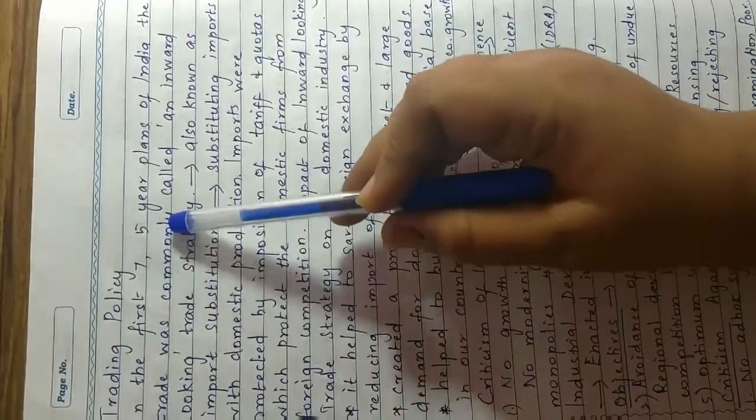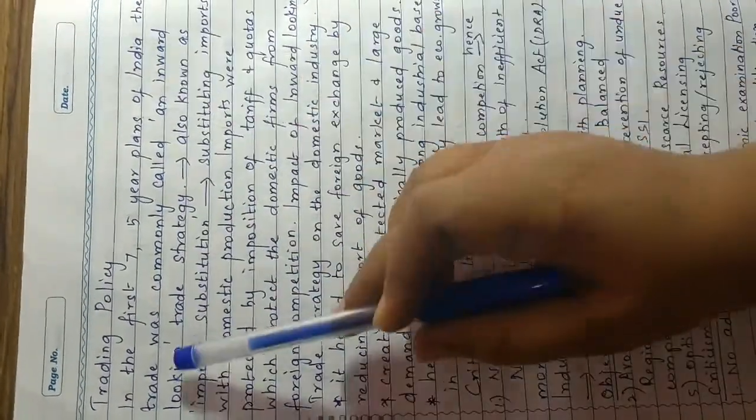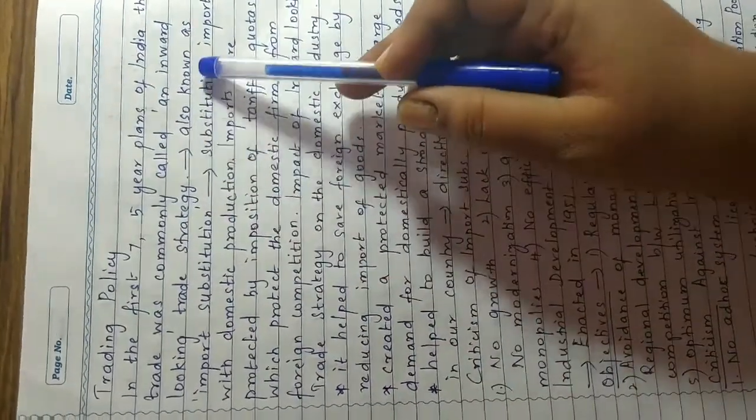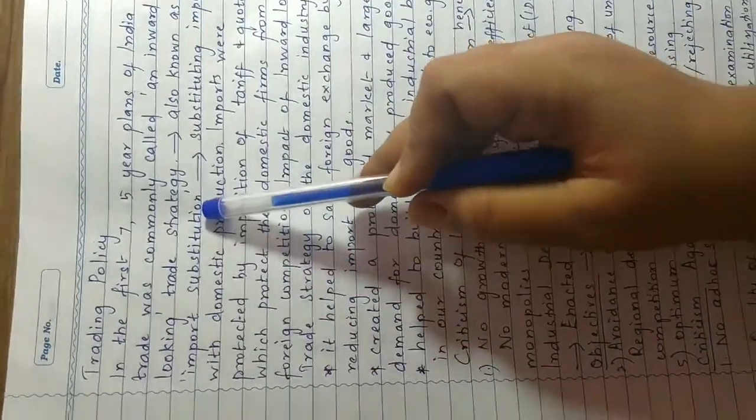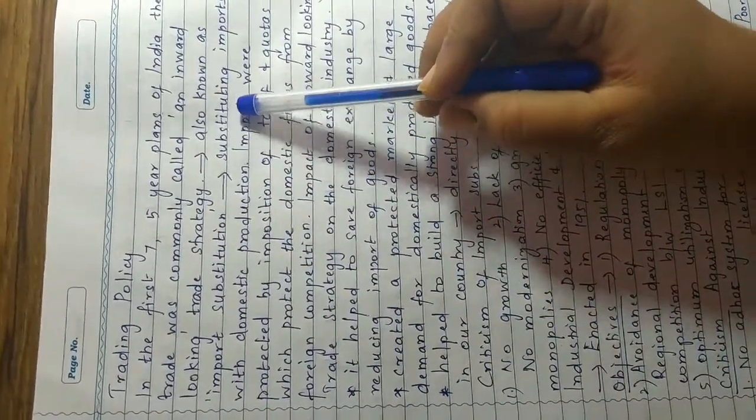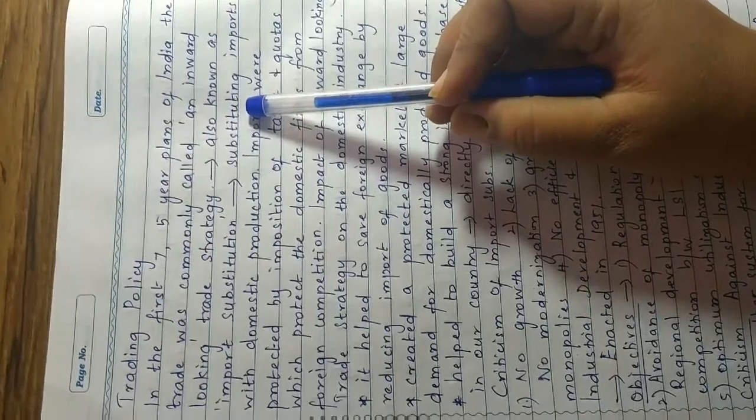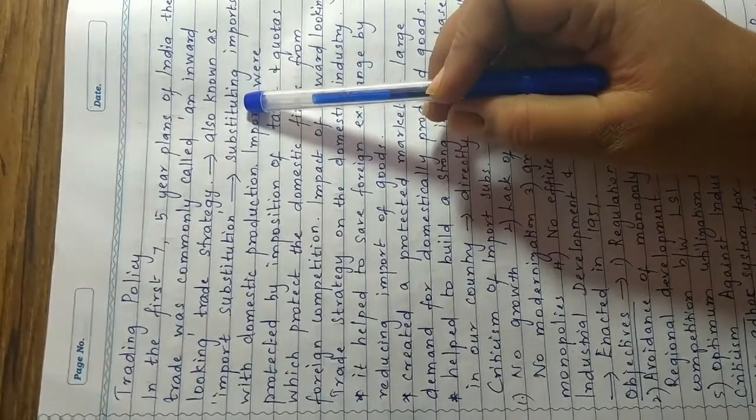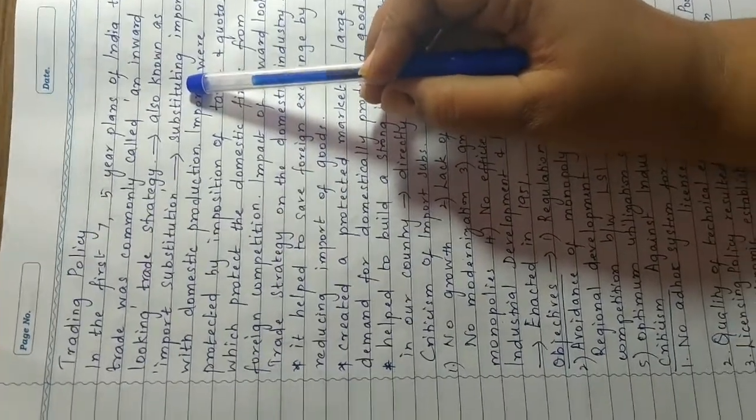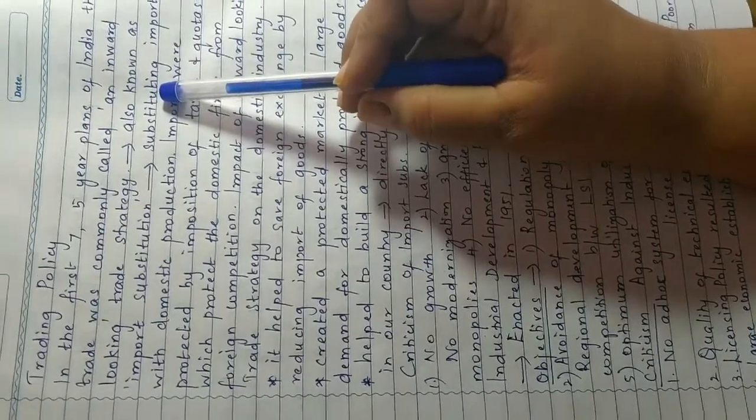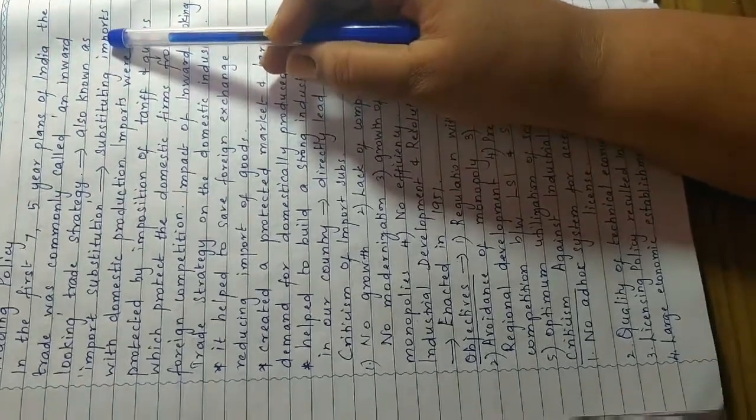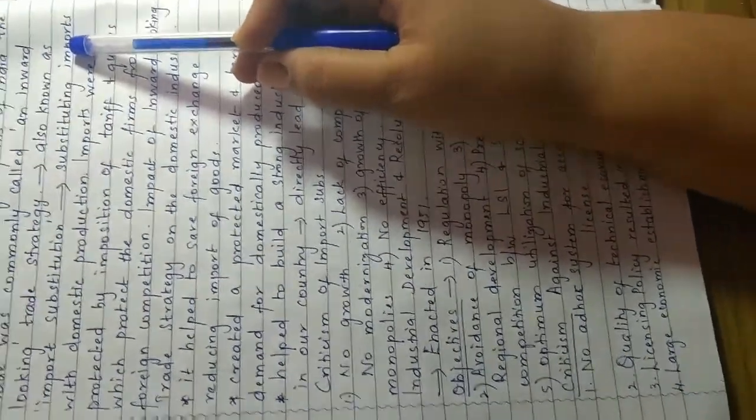In the first seven five-year plans of India, the trade was commonly called an inward looking trade strategy. It is also known as import substitution. Import substitution is a trade and economic policy which advocates replacing foreign imports with domestic production. It is based on the premise that a country should reduce its foreign dependency through the local production of industrialized products. That is substituting imports. We are taking everything from the domestic. It is not being imported.